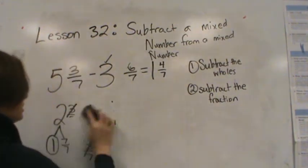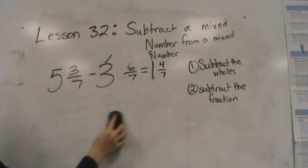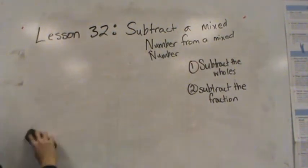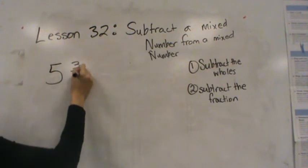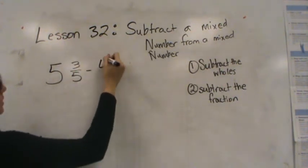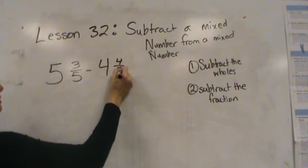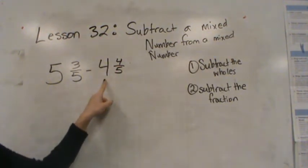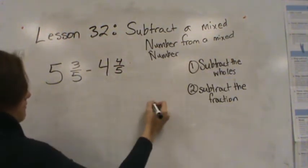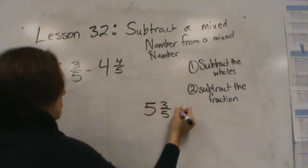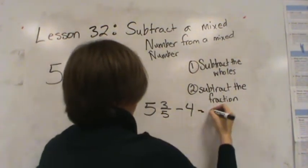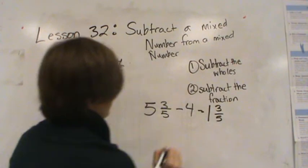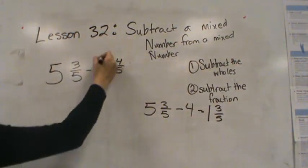Let's do one more before it's your turn. And remember, use your practice as a model so that you know what to do when you are doing your own problems to turn in for homework. Let's do 5 and 3/5 minus 4 and 4/5. So first I'm going to subtract the whole. So I have 5 and 3/5 minus 4 because it's the whole that I'm taking away. 5 minus 4 is 1 and 3/5. So I subtracted the whole.